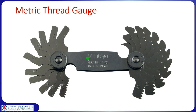This is a metric thread pitch gauge. It has metric thread pitches representing the distance between threads. The one highlighted is 1.25, standing for 1.25 millimeters between each thread. Another leaf shows 2 millimeters between threads, meaning each thread is 2 millimeters apart.